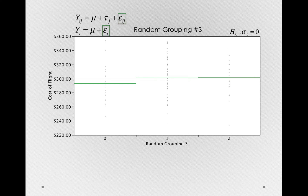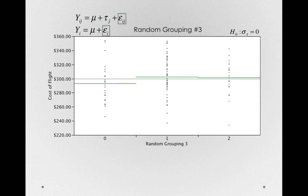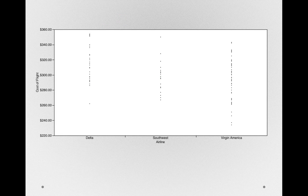But I want to give you a slightly better reason why. When we don't have random groupings — when instead there really is a treatment effect — we still want to be using that epsilon term from the full model, because that term will not be contaminated with the treatment offsets.